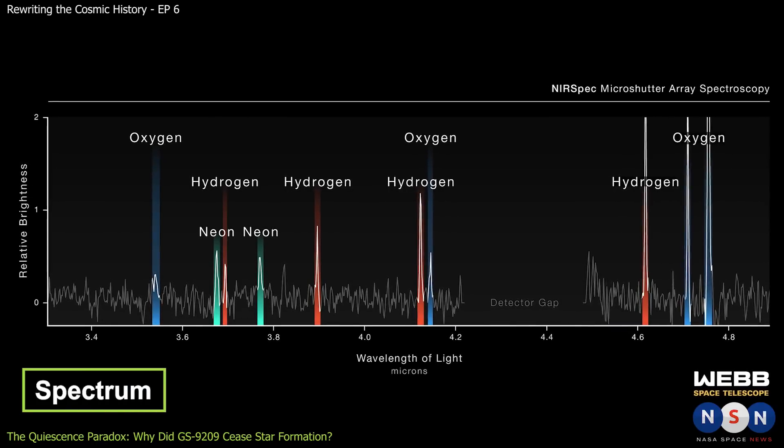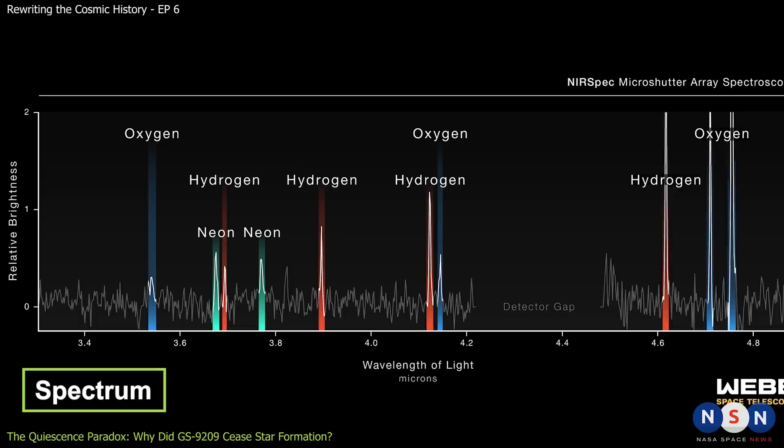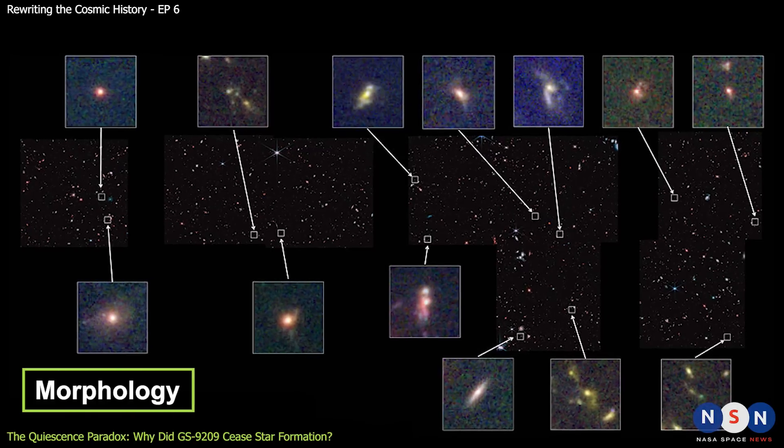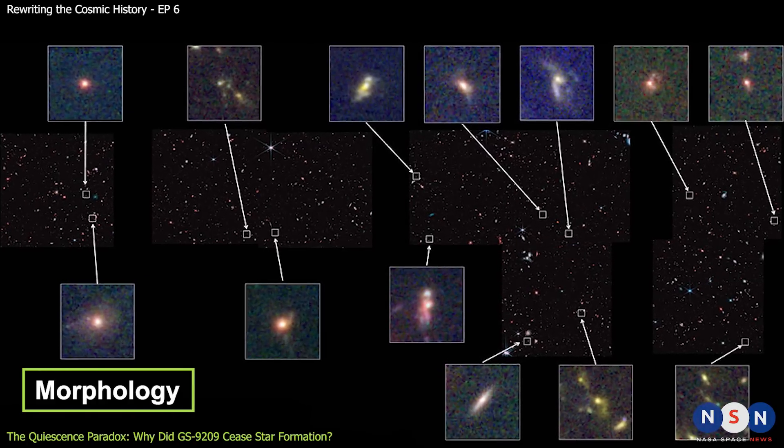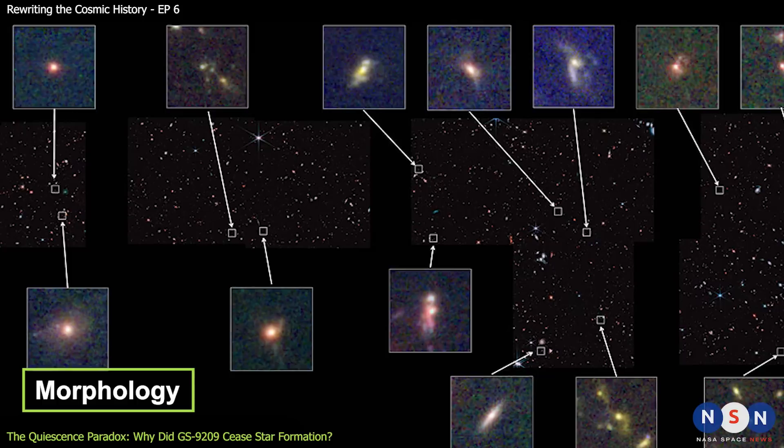A spectrum is a measure of how much light a galaxy emits at different wavelengths, which can reveal its chemical composition, temperature, and motion. A morphology is a measure of how a galaxy looks in terms of its shape, size, and structure, which can reveal its history and evolution.